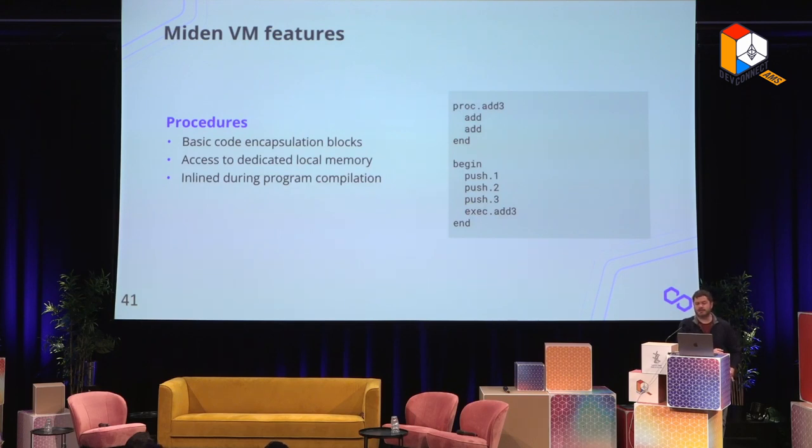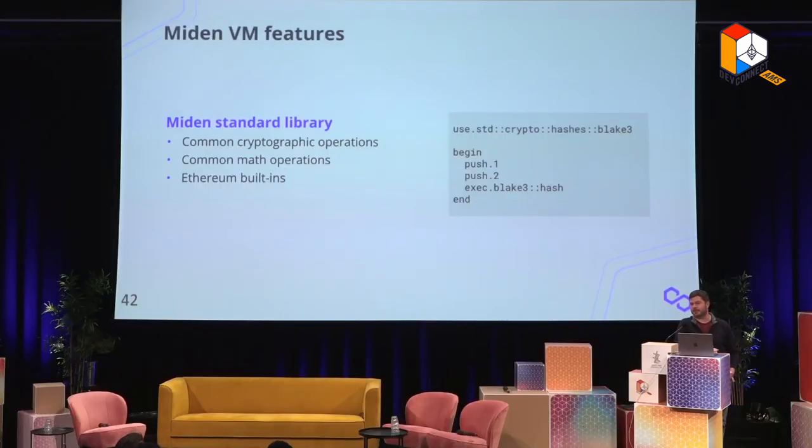We have procedures, similar to functions, where you can declare locals — similar to how WebAssembly handles function calls. This is the basic way to encapsulate code within Miden VM. We're also building the Miden standard library, which will include basic cryptographic operations like hash functions and signature schemes, common math operations, and Ethereum built-ins. For example, since Miden VM memory is word-addressable while EVM memory is byte-addressable with 32-byte chunks, the standard library will include a built-in to interpret memory the same way EVM does.